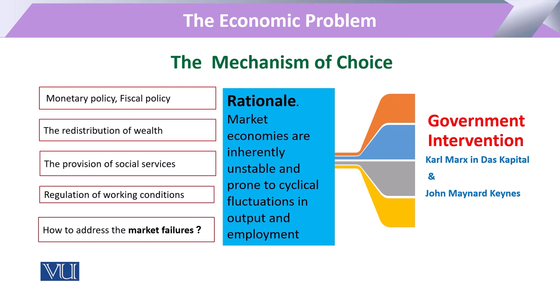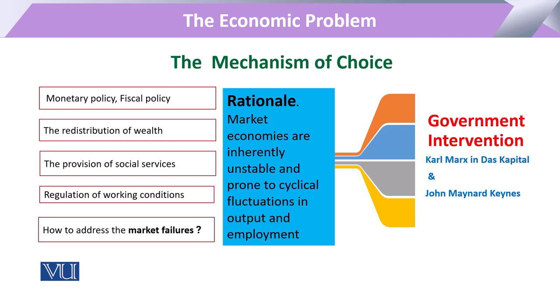So those rules, structures, and systems provided by the government work under government intervention. That will be one extreme — that there can be 100% government intervention — and on the other hand, we can have only market structures. But mostly these two work side by side.